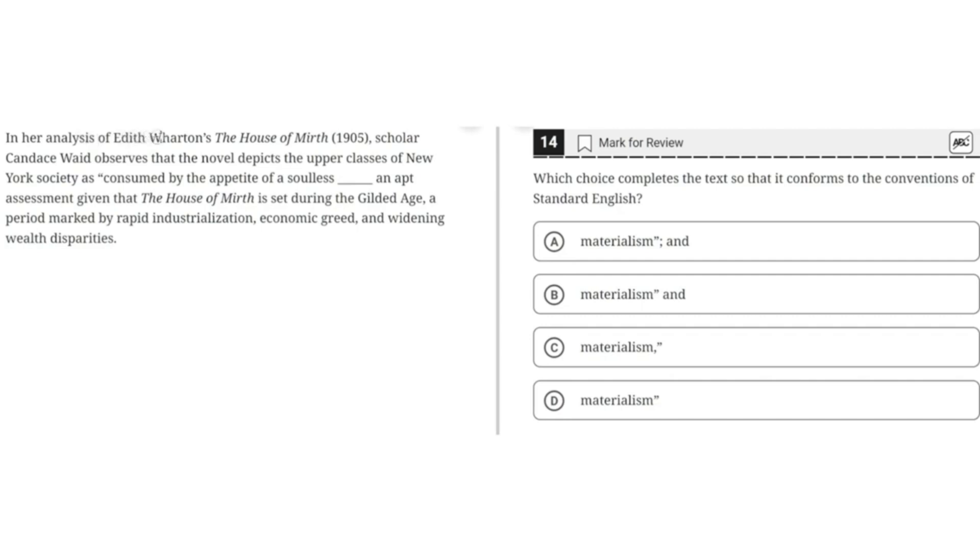In her analysis of Edith Wharton's The House of Mirth, scholar Candace Wade observes that the novel depicts the upper classes of New York society as consumed by the appetite of a soulless [blank], an apt assessment given that The House of Mirth is set during the Gilded Age, a period marked by rapid industrialization, economic greed, and widening wealth disparities.